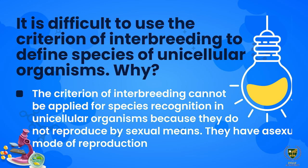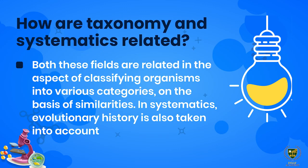Next: How are taxonomy and systematics related? Both these fields are related in the aspect of classifying organisms into various categories on the basis of similarities. In systematics, evolutionary history is also taken into account — the evolutionary links between different species are utilized, and organisms are classified into different groups on the basis of their evolutionary history as well.